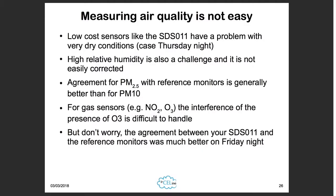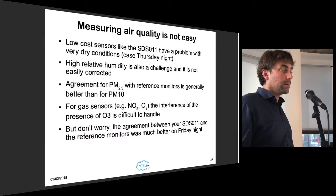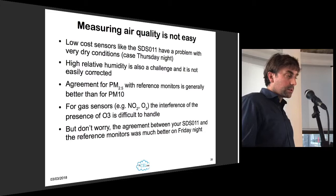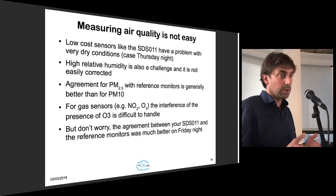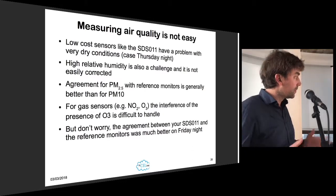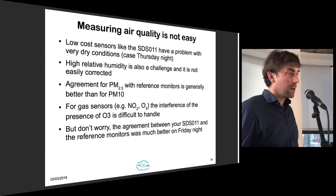On Friday night, the problem was not there anymore — measurements were more or less the same. Thursday night was very dry air, which is a known issue with low-cost sensors. There may be possibilities to correct for this — low relative humidity might be easier to correct. That's a field where a lot of innovation is still possible, and it is especially by opening up or having open data services that we can look at this together. You can do things we cannot do, and we can do things you cannot do.